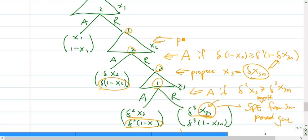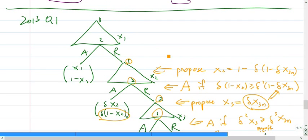And go back again. What should I propose? I should propose when this thing holds with equality. So x2 is equal to 1 minus delta 1 minus delta x3.